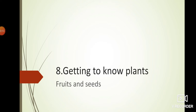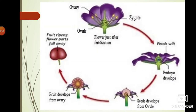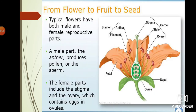Last class, we saw about flowers. Have you all read the lesson? Are you thorough in the topic? We will recap flowers. Now look at this picture. We know that a flower is a reproductive part of the plant and it has very attractive and colorful petals with fragrance.